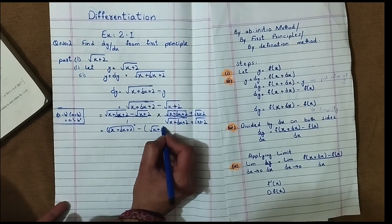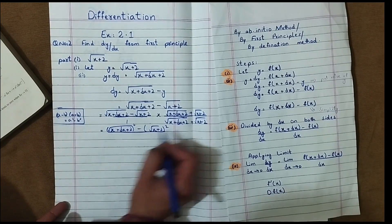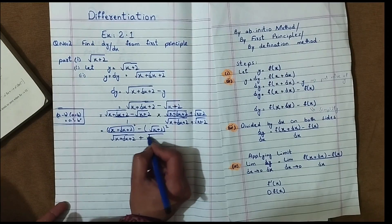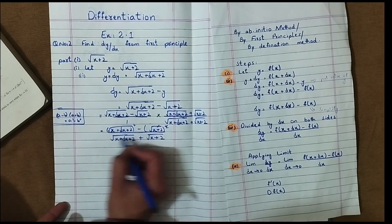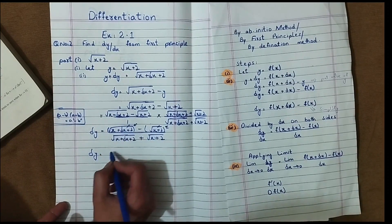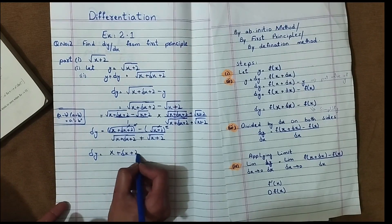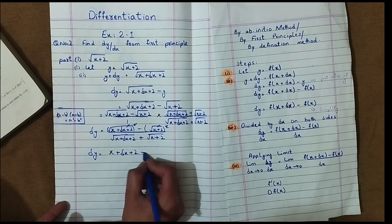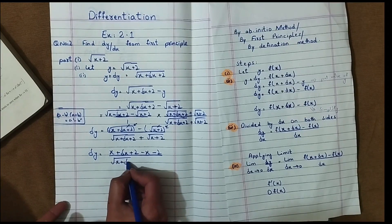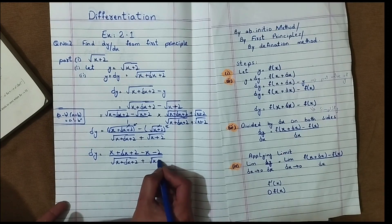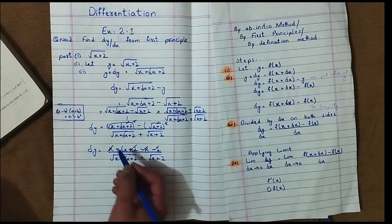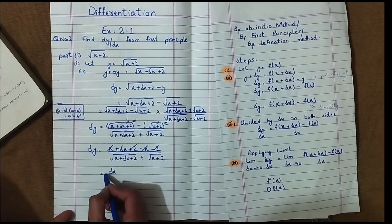After squaring under the roots, delta y equals x plus delta x plus 2 minus x minus 2, all over under root x plus delta x plus 2 plus under root x plus 2. Simplifying the numerator: minus x plus x and plus 2 minus 2 cancel, leaving just delta x over under root x plus delta x plus 2 plus under root x plus 2.